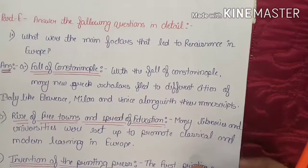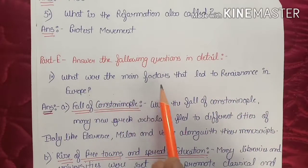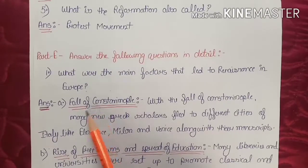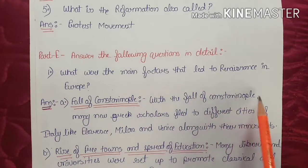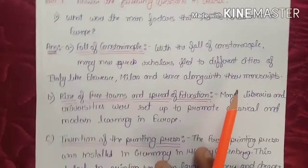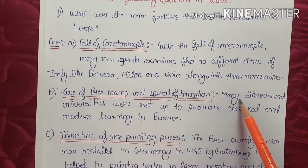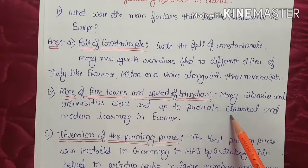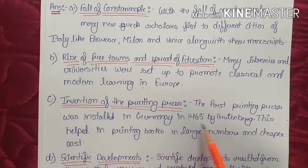Now we will discuss some questions related to this lesson. First question: what were the main factors that led to the Renaissance in Europe? The fall of Constantinople caused many Greek scholars to flee to different cities of Italy like Florence, Milan, and Venice along with their manuscripts. Rise of free towns and spread of education: many libraries and universities were set up to promote classical and modern learning in Europe. The first printing press was installed in Germany in 1465 by Gutenberg, helping print books in large numbers at cheaper cost.